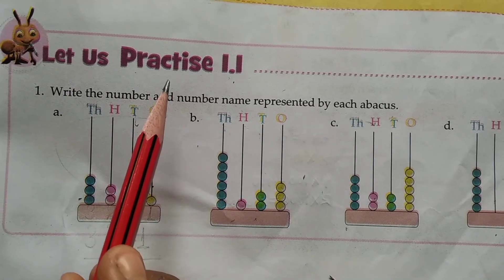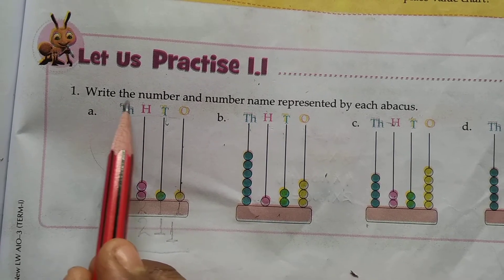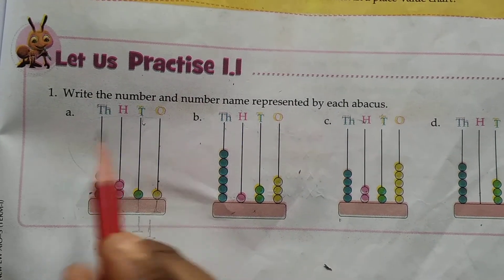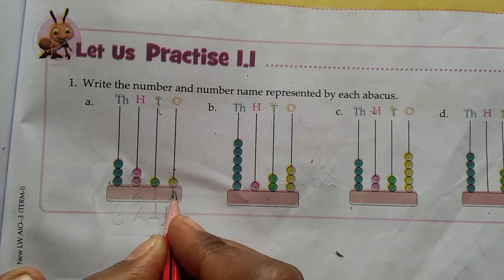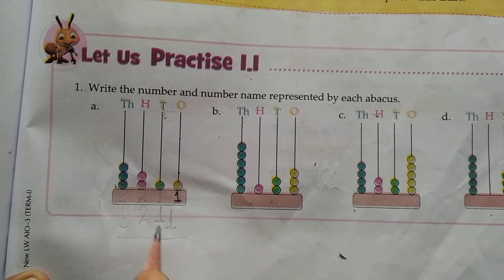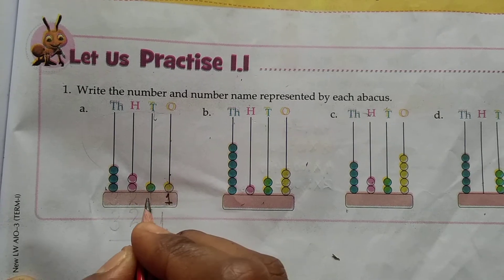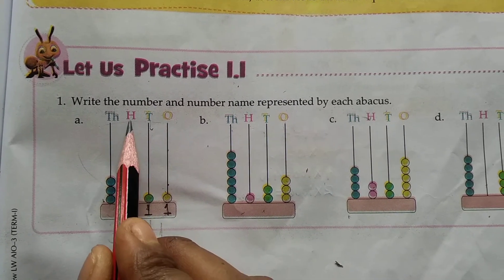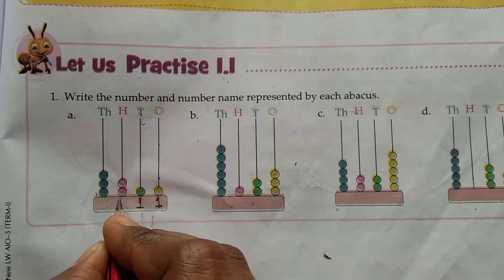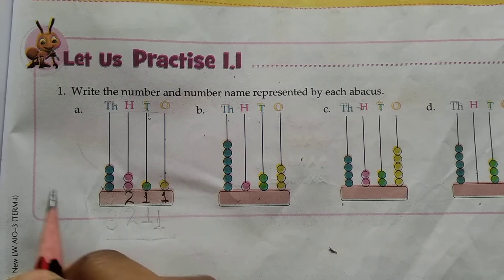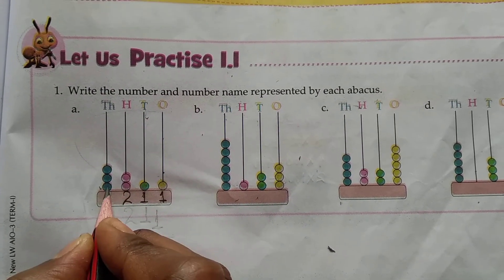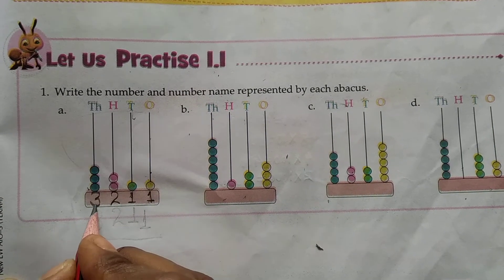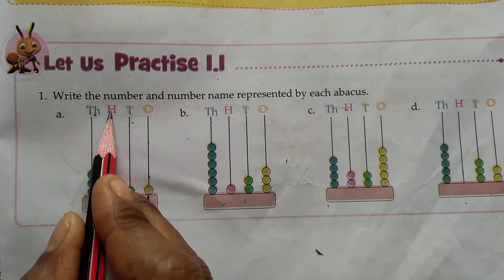Now let us practice 1.1. Question 1: Write the number and number name represented by each abacus. In ones place, 1 bit — we write 1. In tens place, 1 bit — we write 1. In hundreds place, 2 bits — we write 2. In thousands place, 3 bits — we write 3. We read it as 3,211.